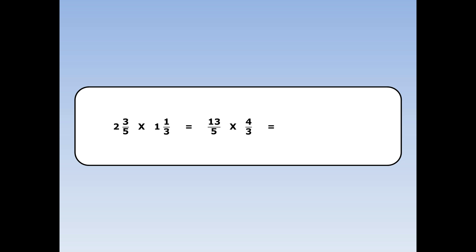And now I continue as normal: top times top, bottom by bottom. 13 times 4 is 52, 5 times 3 is 15. Now this is a top heavy fraction so it can be turned back into a mixed number. 52 fifteenths is the same as 3 wholes and 7 fifteenths.